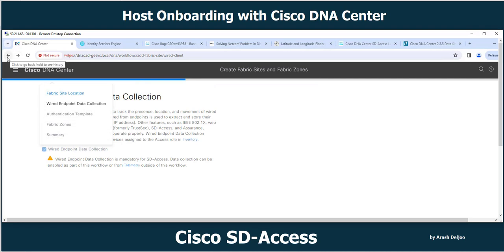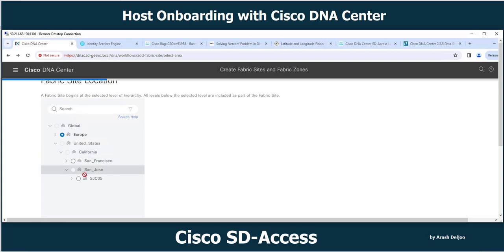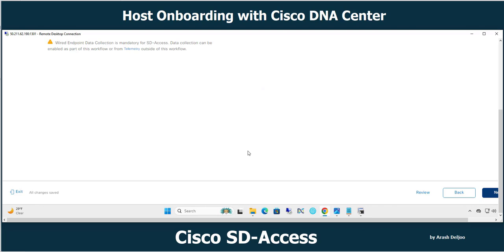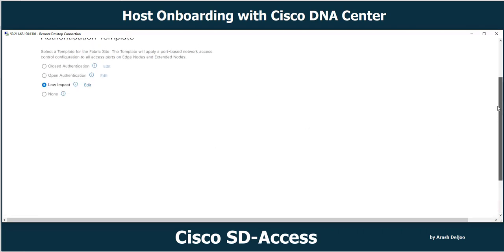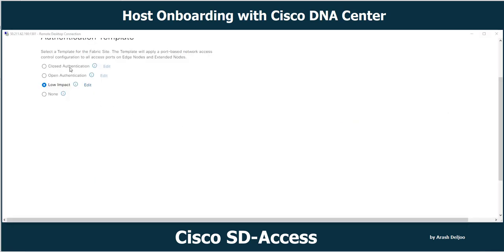This is a bit beyond the scope of this video, but in future videos you will learn about it. For example, you can navigate the site hierarchy: United States > California > San Jose, and for a specific floor — such as San Jose Floor 1 — you can apply a different method of authentication than what is configured globally. You can apply different authentication methods for different levels of the site hierarchy.